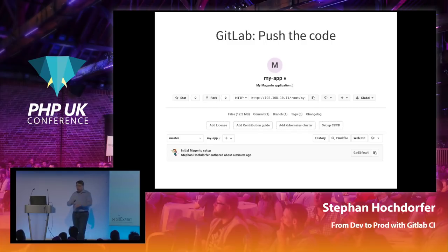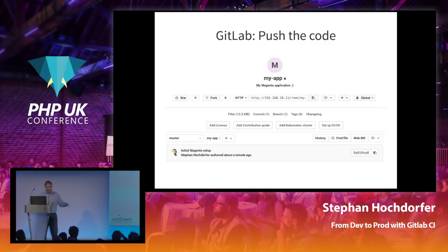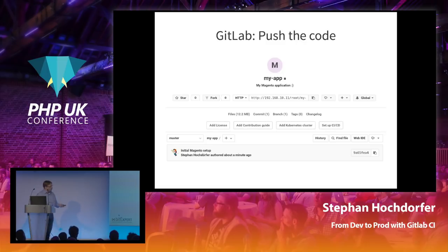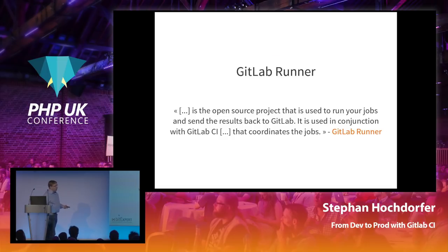Up to this point, nothing happens regarding builds — the code has landed in GitLab but nothing is triggered. To be able to build that code or do anything with it, we need to install one more piece of the puzzle: the GitLab Runner — the last one, I promise.